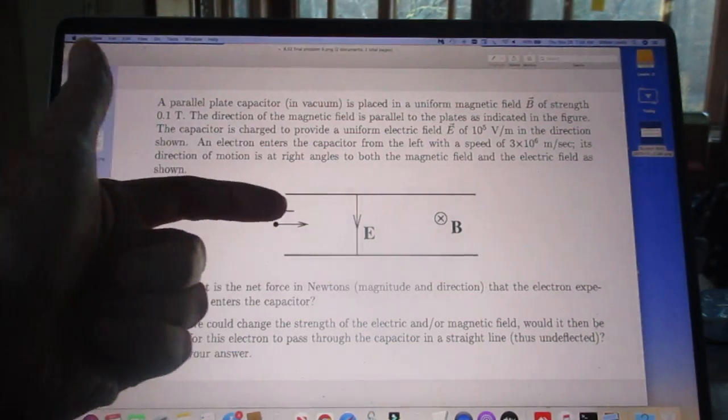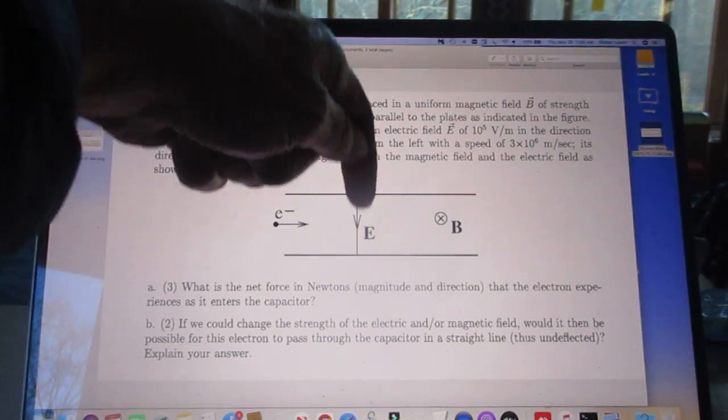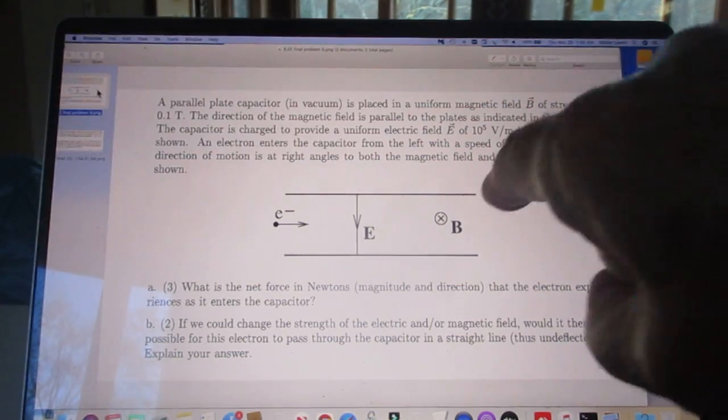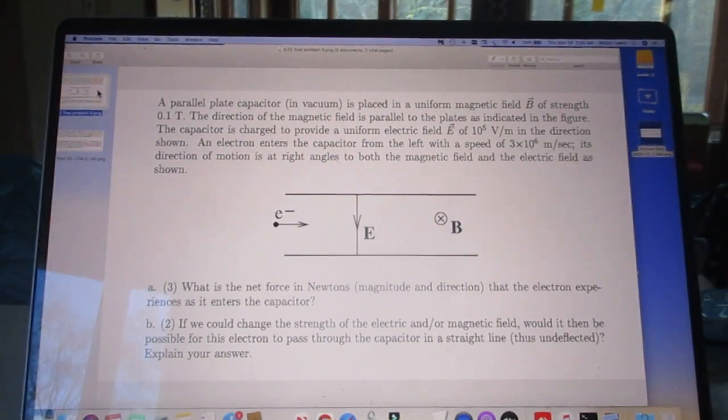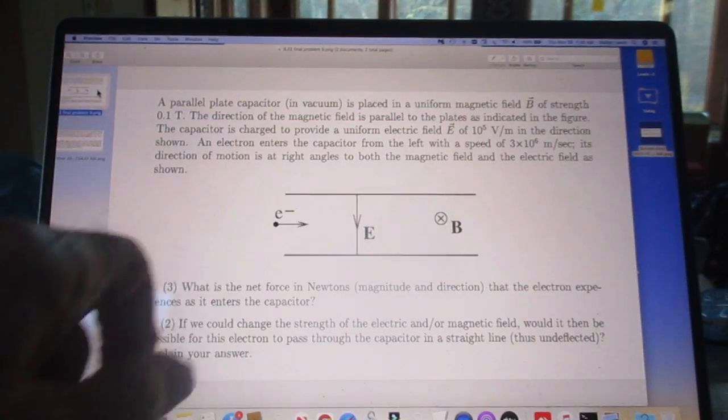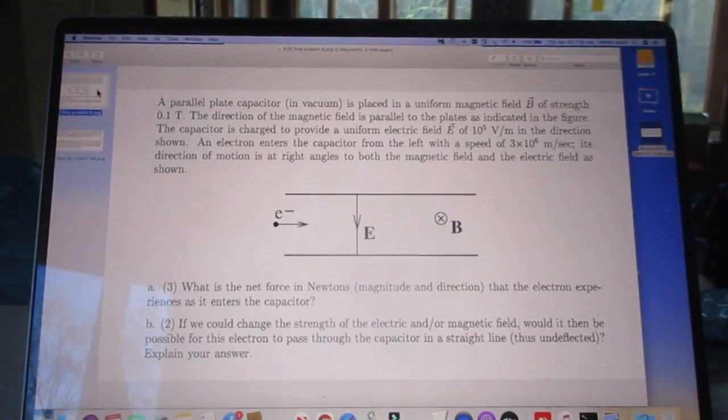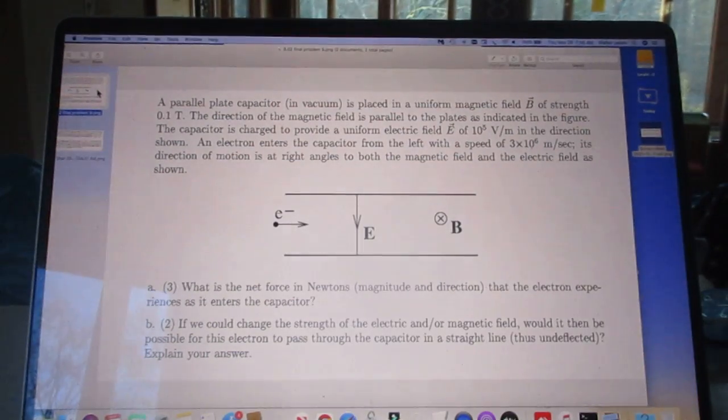There is an electron coming from the left. This is a capacitor. There is an E-field in the capacitor like this, and there is a B-field in the capacitor pointing inwards. The electron, of course, experiences a force in the E-field, Q times E. But that force is upwards because the electron has a negative charge.